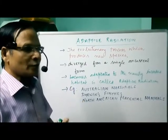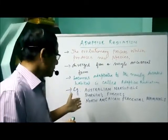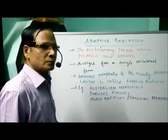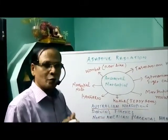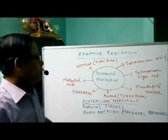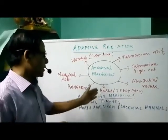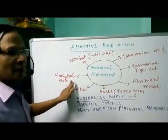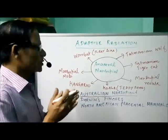From a single ancestor marsupial, many marsupials have been diversified. Examples of adaptive radiation in Australian marsupials include: Tasmanian wolf, Tasmanian tiger cat, marsupial mouse, koala, Australian glider, kangaroo (the best known pouch mammal), marsupial mole (a rat-like animal), and wombat (a bear-like animal). This is an example of adaptive radiation seen in Australian marsupials.